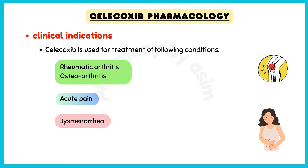Clinical indications of Celecoxib include rheumatoid arthritis, osteoarthritis, acute pain, and dysmenorrhea.